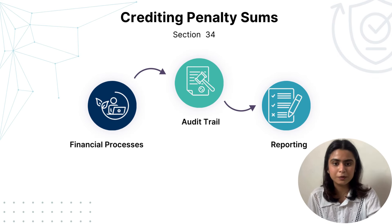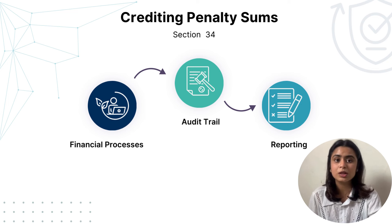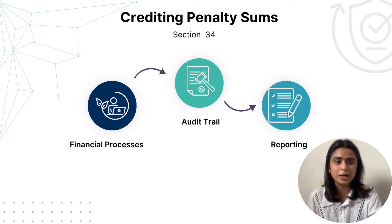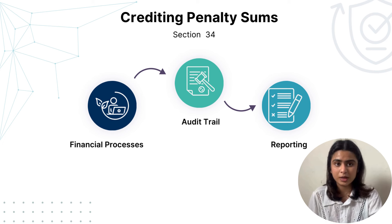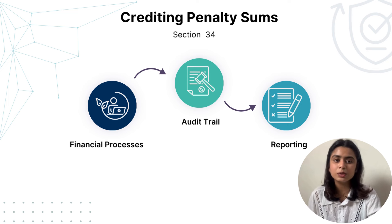Coming to Section 34, that is the crediting of penalty sums. The first action step is to establish clear financial processes to manage and remit penalty payments to the Consolidated Fund of India efficiently. For example, Infosys uses automated systems to manage financial tasks, making sure they follow the rules and pay penalties on time. Organizations must have a streamlined financial process to enhance accountability and ensure compliance with the DPDP Act.